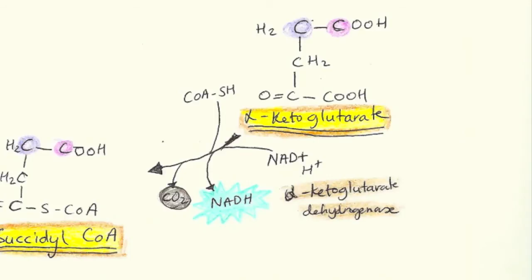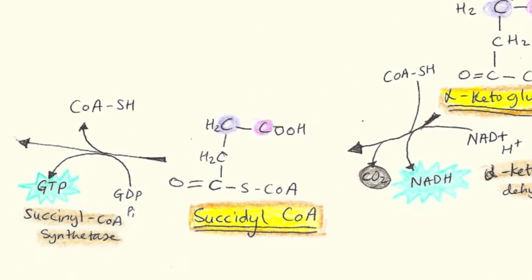Coenzyme A comes back onto the scene. It reduces NADH. No, it does not. It reduces NAD+ to NADH. And alpha-ketoglutarate dehydrogenase helps this reaction. Remember, when we have a dehydrogenase, we have NADH being formed. Another carbon dioxide is given up, giving us a four-carbon molecule, succinyl-CoA.